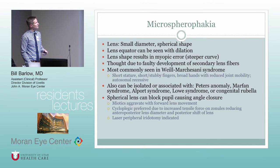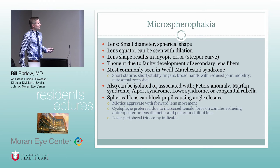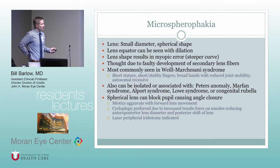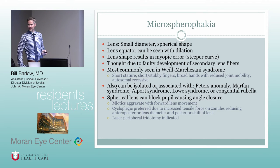With microspherophakia, dilation usually reveals the full lens equator. Because of the steep curvature, it results in a myopic error. It's most commonly seen in Weill-Marchesani syndrome, and also in Alport's, Lowe syndrome, and Marfan's. The biggest concern with a spherical lens is greater risk of pupil block angle closure. Miotics aggravate this by causing forward lens movement. Cycloplegia is the preferred treatment, as it increases tensile force on the zonules. An LPI is the ultimate treatment for this form of angle closure.